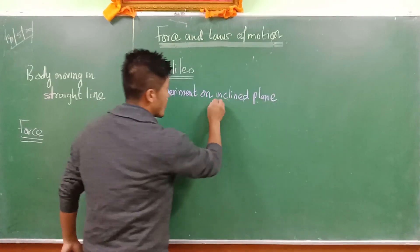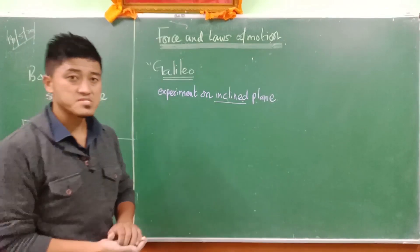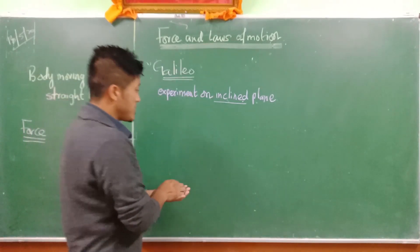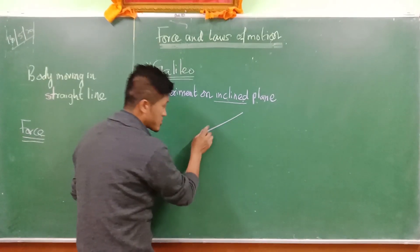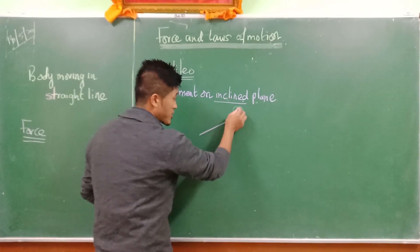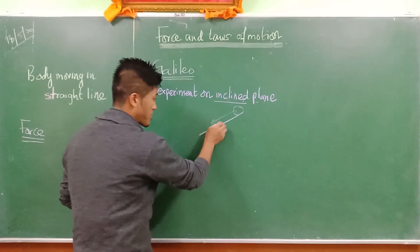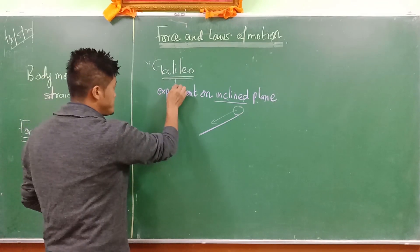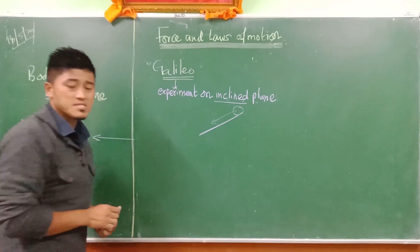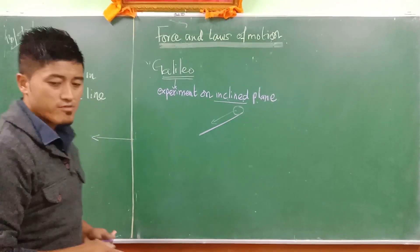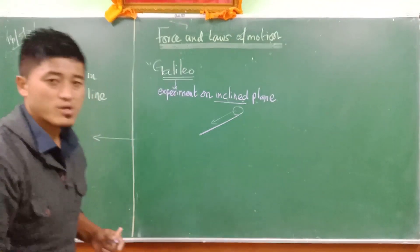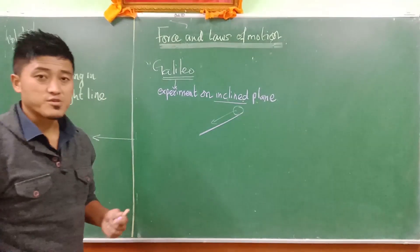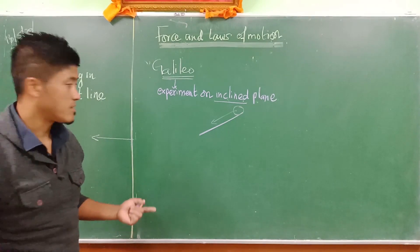What is the meaning of inclined? Inclined means something like a slope, where any object will roll down. Galileo, maybe in the 16th century, did a really beautiful experiment and he gave one conclusion from that. That conclusion is very much related to our lesson.